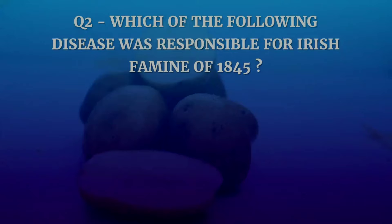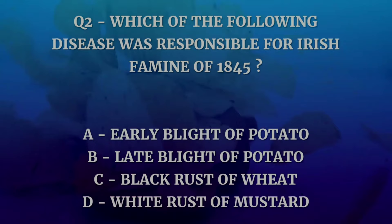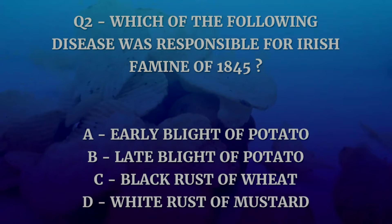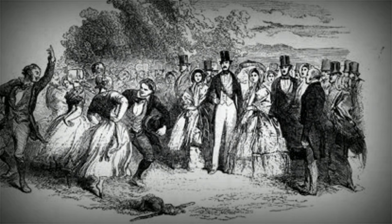For registered seed the tag color is purple, and for certified seed the tag color is blue. Question number two: which of the following disease was responsible for the Irish famine of 1845? The options are early blight of potato, late blight of potato, black rust of wheat, or white rust of mustard. The answer is late blight of potato, which is caused by Phytophthora infestans.